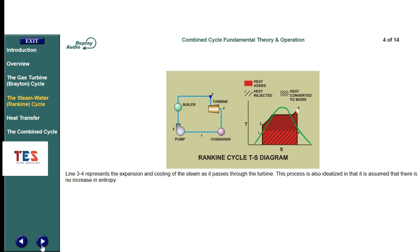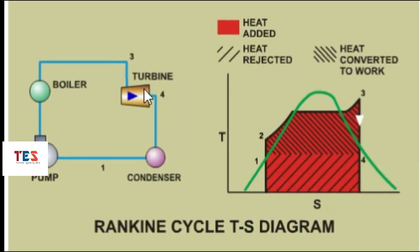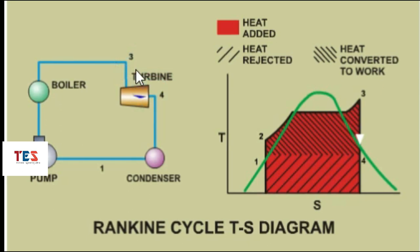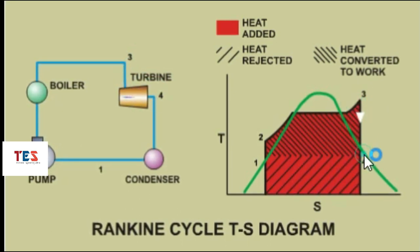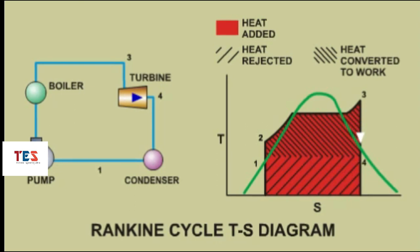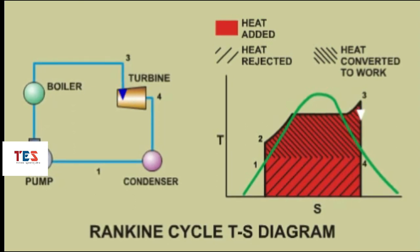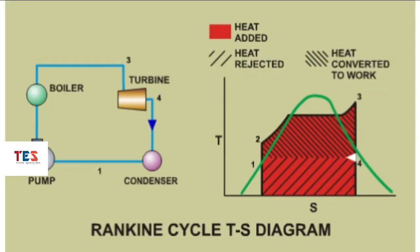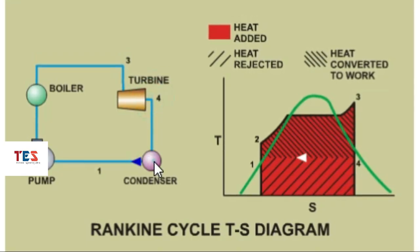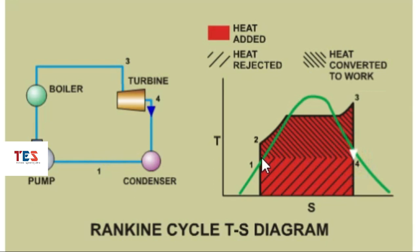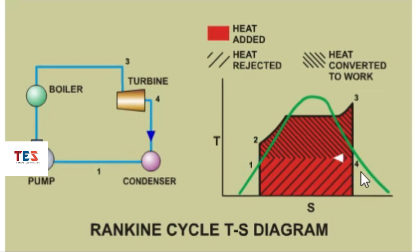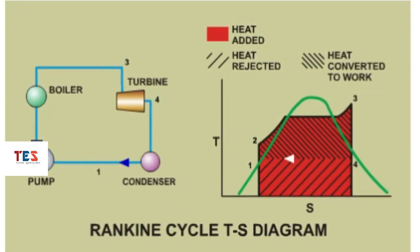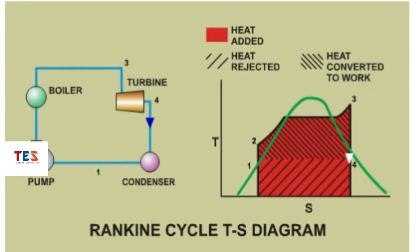Line 3-4 represents the expansion and cooling of the steam as it passes through the turbine. This process is also idealized in that it is assumed there is no increase in entropy. The last process, represented by line 4-1, is the condensation of the steam exhausted from the turbine, during which a considerable amount of heat is lost.